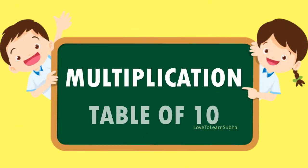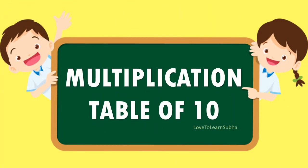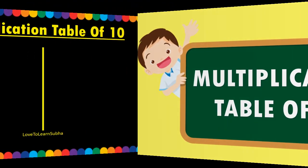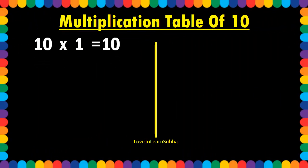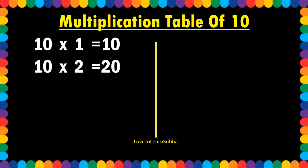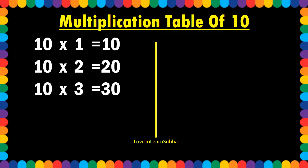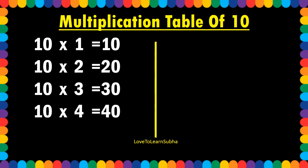Multiplication table of 10. 10 1s are 10. 10 2s are 20. 10 3s are 30. 10 4s are 40. 10 5s are 50.